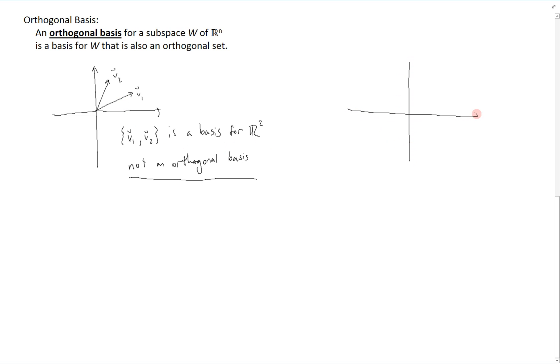However, if we look at another example here, suppose that we have the same vector V1, but now the other vector looks more like this. And we have this 90 degree angle between them. Now, V1 and V2, by our old definitions, is still a basis for R2 because it's made up of two linearly independent vectors. But it's also an orthogonal basis since the two vectors are orthogonal to each other.